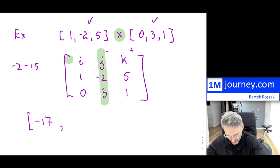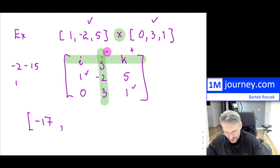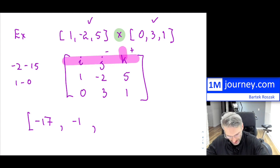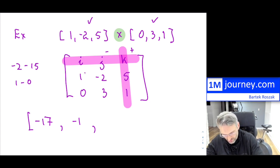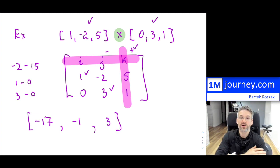For the J component (negative): −(1×1 − 0×5) = −(1 − 0) = −1. For the K component (positive): (1×3) − (0×(−2)) = 3 − 0 = 3. So you have now found the cross product vector: (−17, −1, 3).